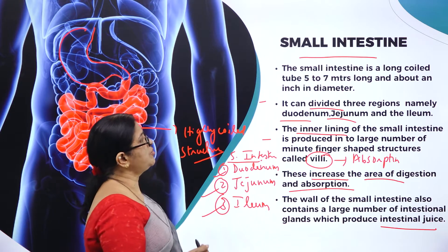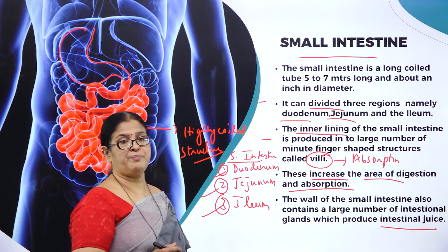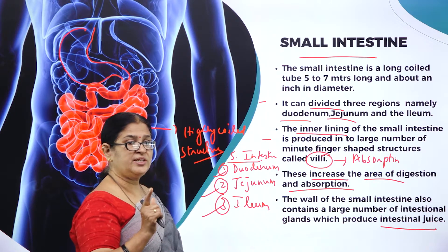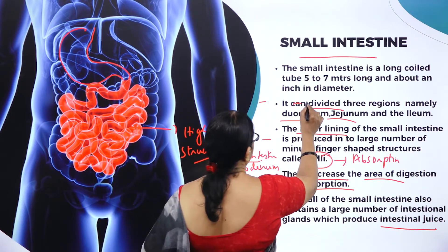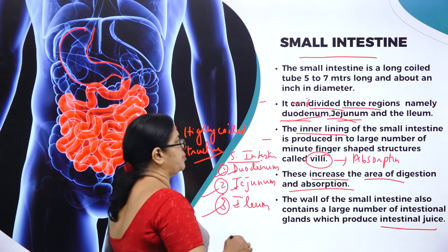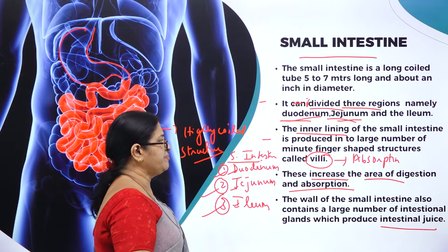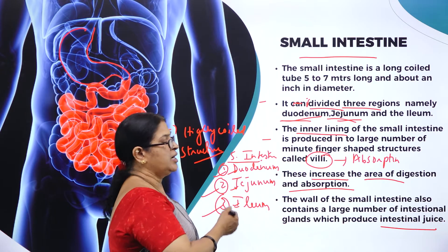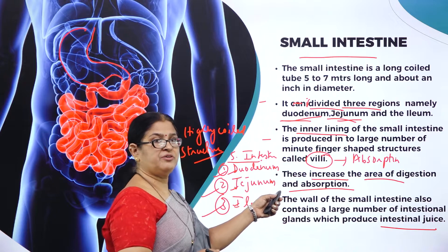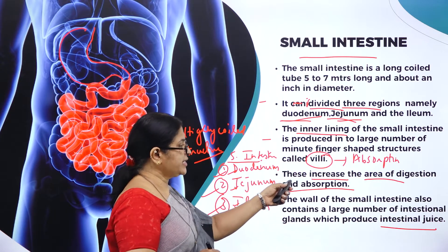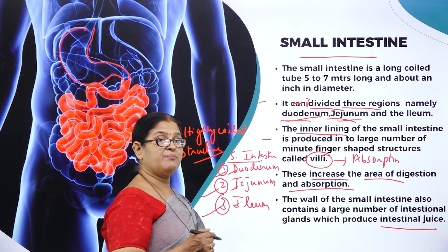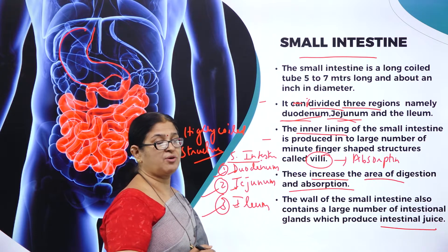The intestinal glands produce intestinal juices which are very important for the final digestion of carbohydrates, proteins, and lipids. To repeat: the small intestine is a long coiled tube around 5 to 7 meters long and about an inch in diameter. It is divided into three regions — duodenum, jejunum, and ileum. The inner lining is produced into finger-like projections called villi, which increase the area of digestion and absorption. The wall also has intestinal glands producing intestinal juice.